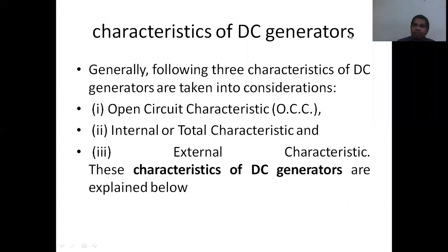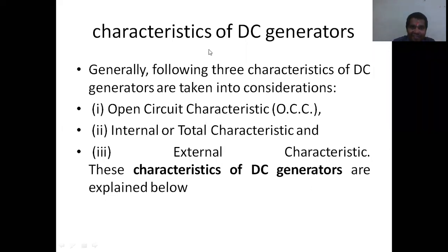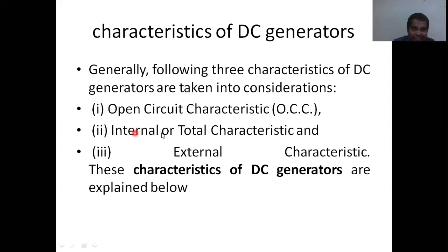Good morning students. Today we are going to discuss the characteristics of a DC generator. There are three characteristics which we normally consider when selecting a generator for any application: one is open circuit characteristics, another one is the internal or total characteristics, and another one is the external characteristics.